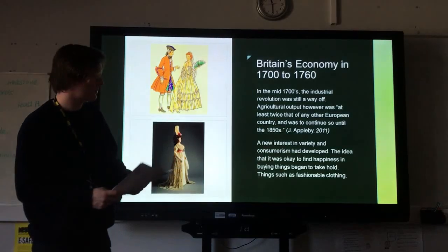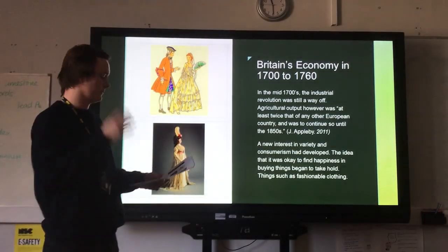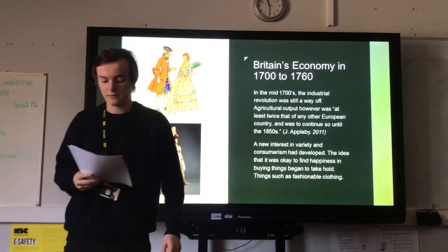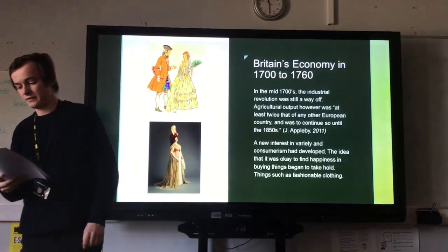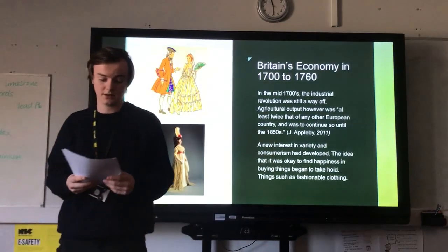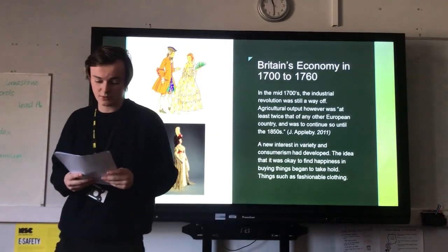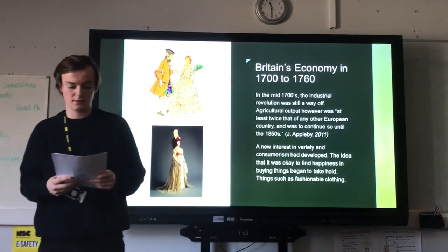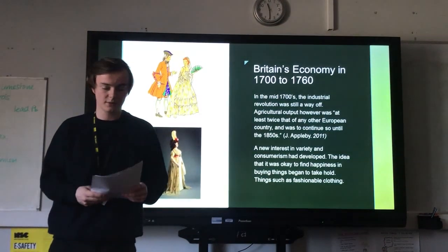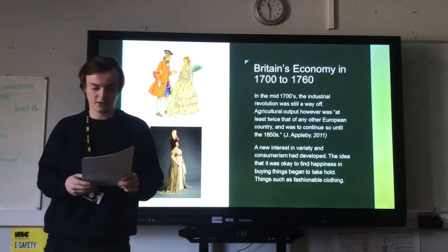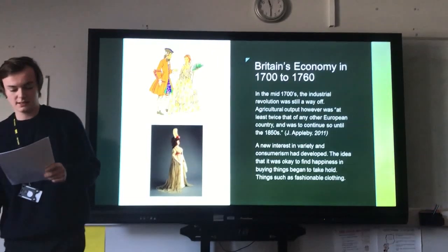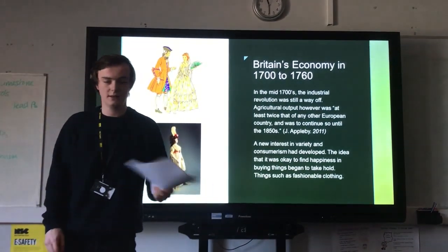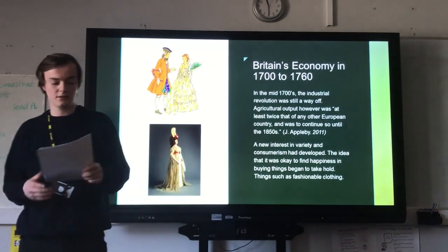This section discusses Britain's economy from 1700 to 1760. In the mid 1700s, the Industrial Revolution was still a way off. Agricultural output, however, was at least twice that of any other European country and was able to continue so until the 1850s. A new interest in variety and consumerism had also developed — the idea that it was okay to find happiness in buying things began to take hold, such as fashionable clothing.